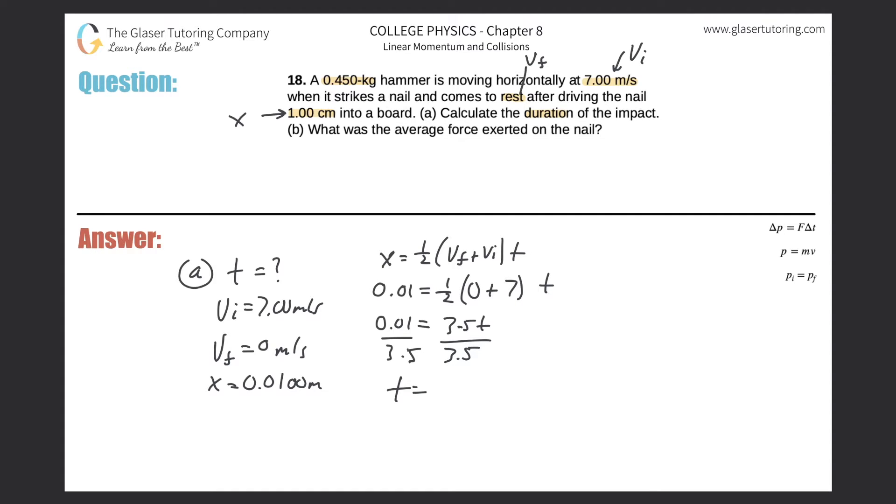And we get a value. So the time of impact was going to be, let me do scientific notation, 2.86 times 10 to the negative 3 seconds. Okay, so that is now the time. That's letter A.